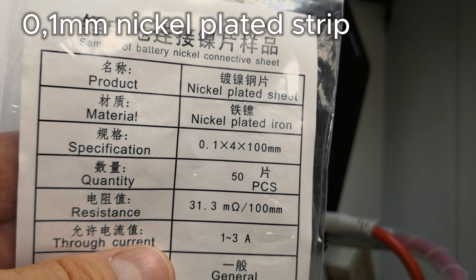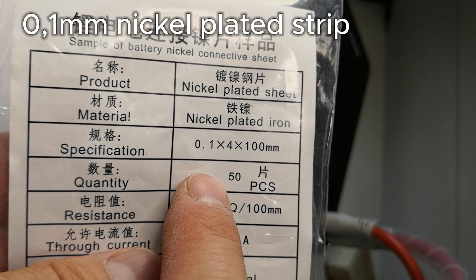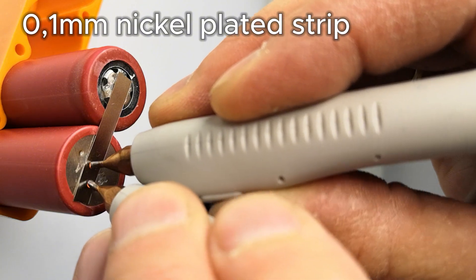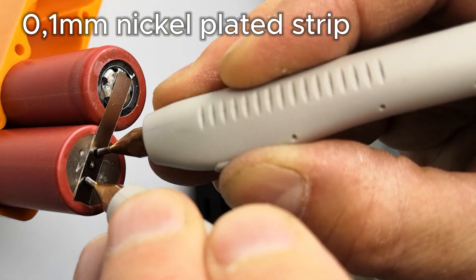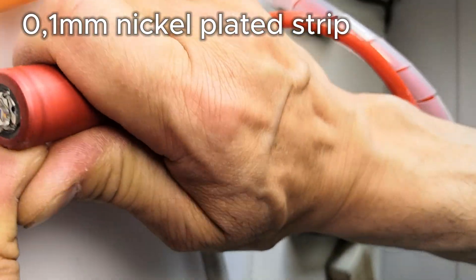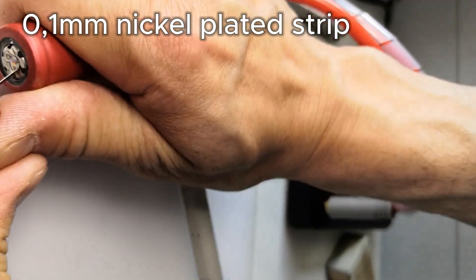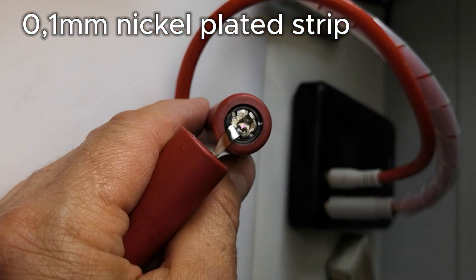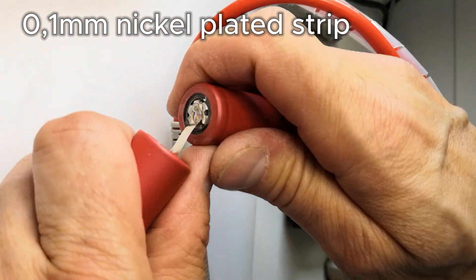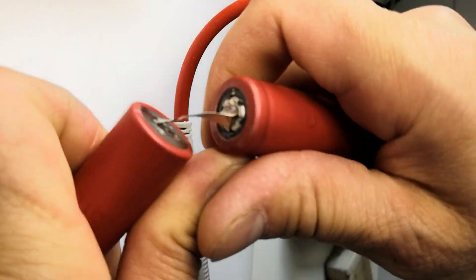Let's try 0.1 mm nickel-plated iron strip. Now, the resistance is high, and the battery cannot be loaded with high currents, but the strips are well attached. This quality is good. By welding several strips on top of each other, you can increase the current capacity.